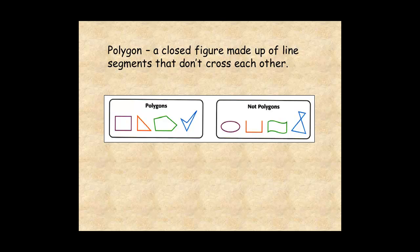These figures are not polygons because they have curves. This figure is not a polygon because it's not a closed figure. And this figure is not a polygon because the line segments cross each other, although it is a composite figure made up of two polygons.